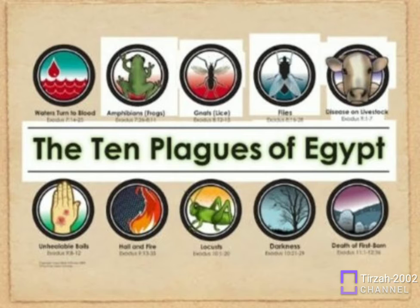Hail — Hail storms kill all the slaves and animals left outside. The result: Pharaoh refuses to let the people go. Exodus 9:13-35. Plague 8.